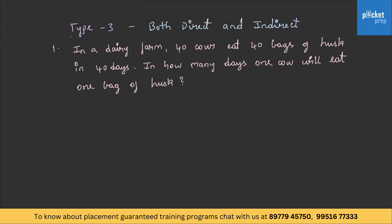We shall try to understand the type 3 questions, that is both direct and indirect questions. Let us solve this. In a dairy farm, 40 cows eat 40 bags of husk in 40 days. In how many days will 1 cow eat 1 bag of husk? Let us differentiate the elements in both the statements. So the elements are cows, number of days, and bags. Similarly C2, D2, and B2.